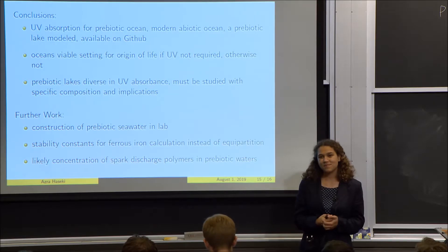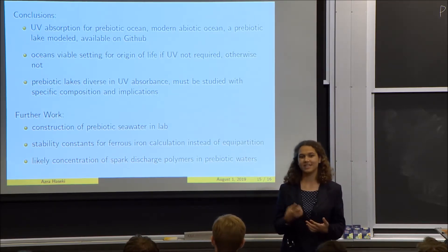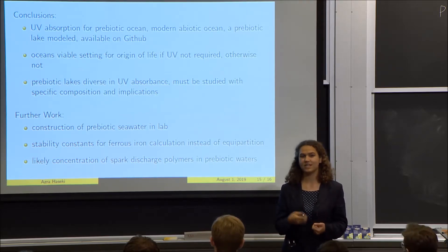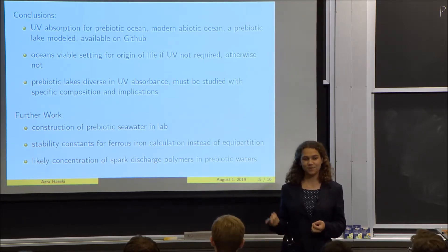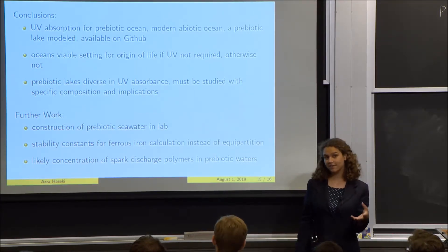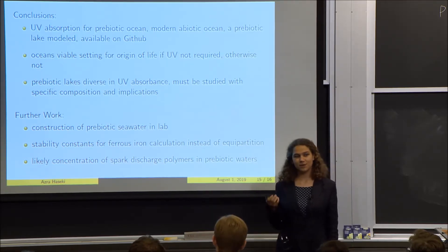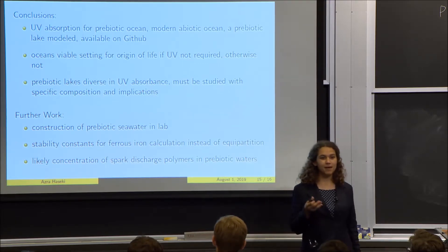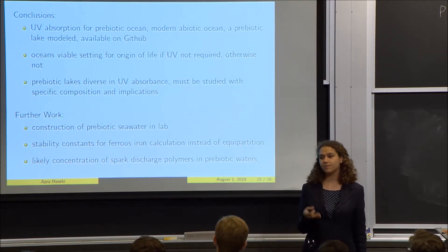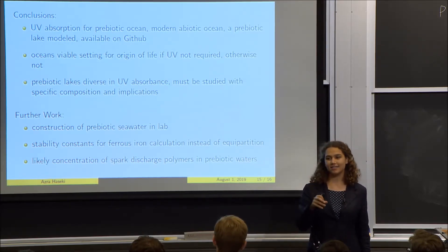In summary, our work modeled the UV absorbance of the prebiotic ocean, the modern abiotic ocean, and a prebiotic lake. We found the prebiotic ocean would be a good place for life to start if UV light was not required for the relevant pathway. The UV absorbance of prebiotic lakes was diverse, and any pathway proceeding in lakes should be evaluated with that lake's specific composition in mind.